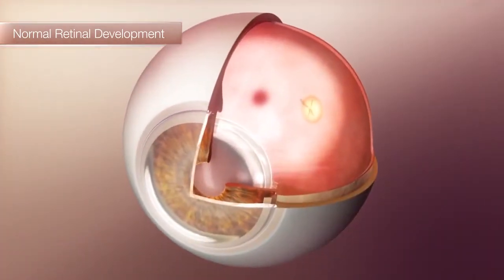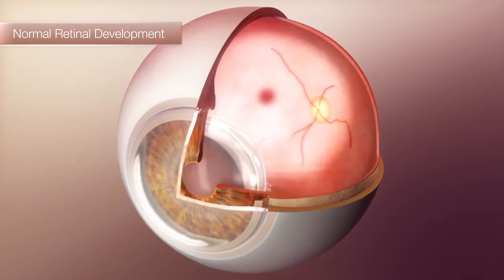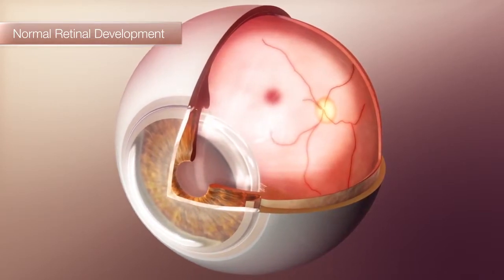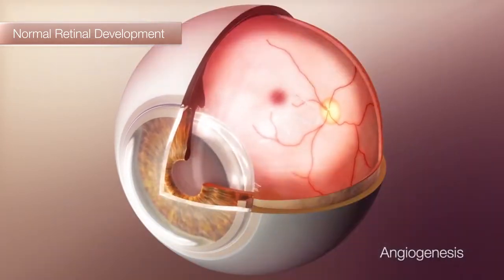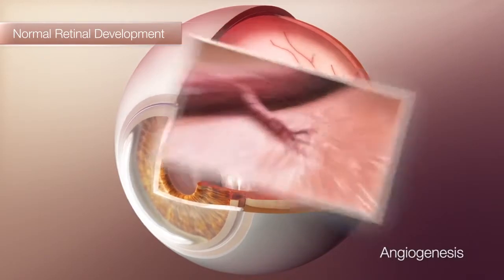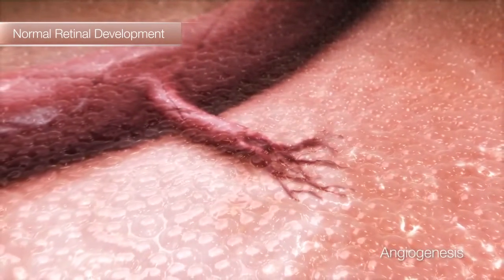First, we see the development of the vascular structure. Then the retinal vasculature is laid down, starting at the optic nerve and radiating outward as new vessels bud from existing ones.